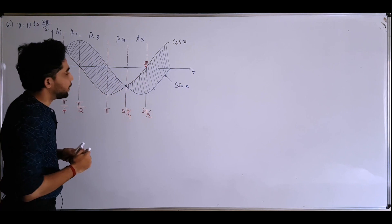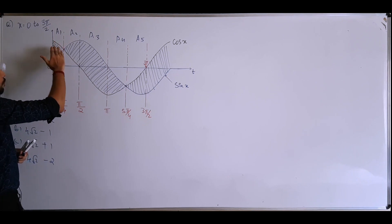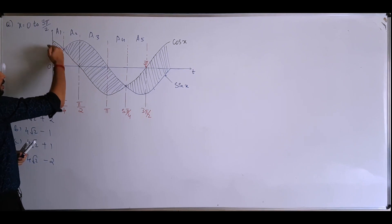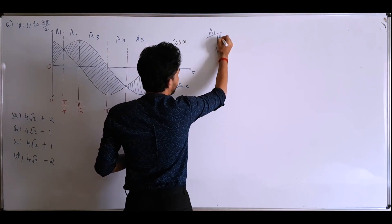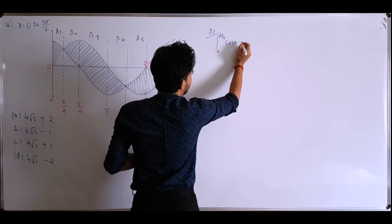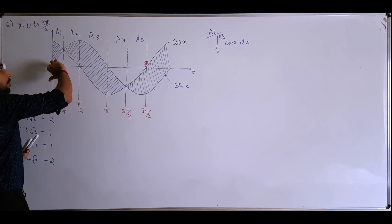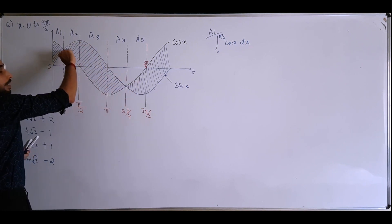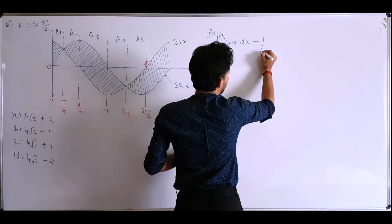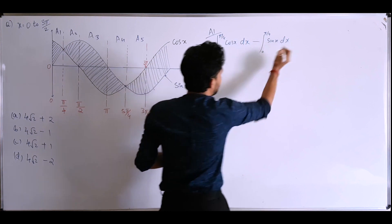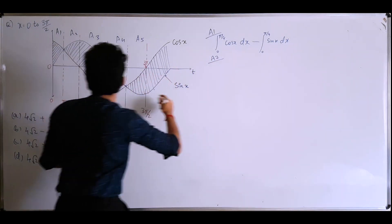For A1, from 0 to π/4, the idea is to find the area under the cos x curve and subtract the area under the sin x curve: A1 = ∫₀^{π/4} cos x dx − ∫₀^{π/4} sin x dx. For A2, from π/4 to π/2, sin x is on top, so we integrate sin x and subtract cos x.